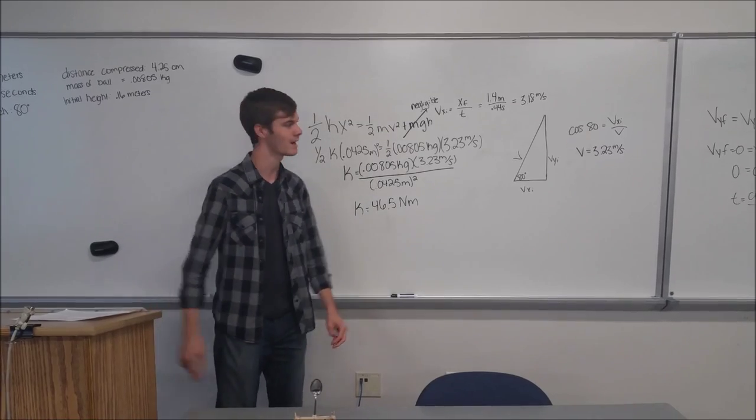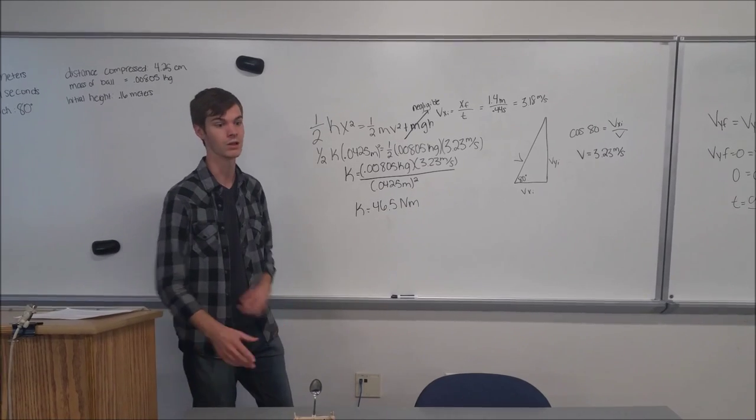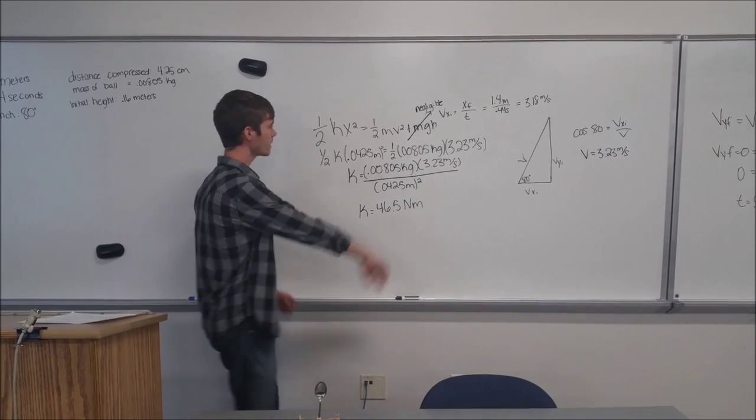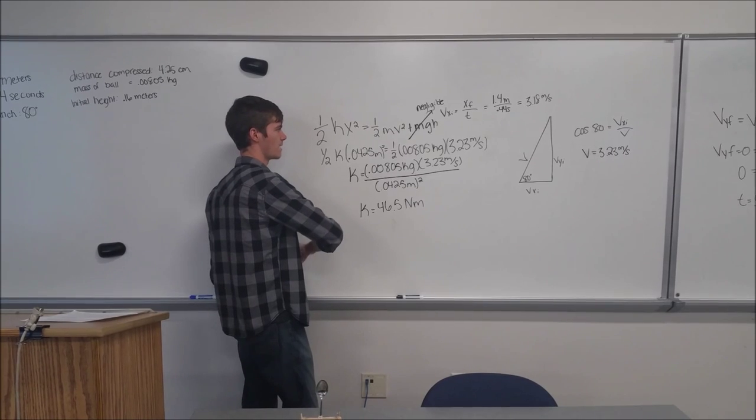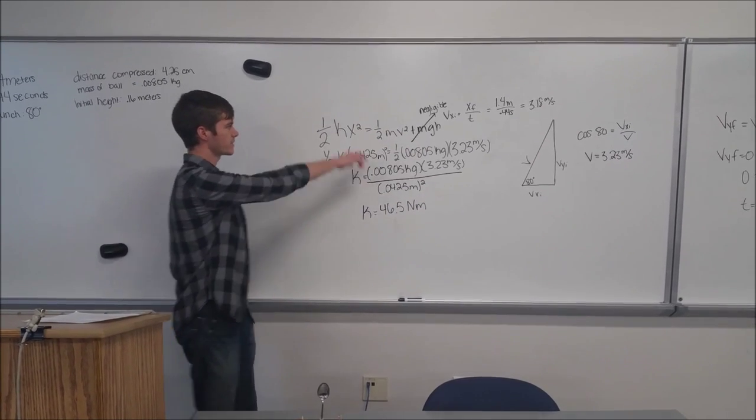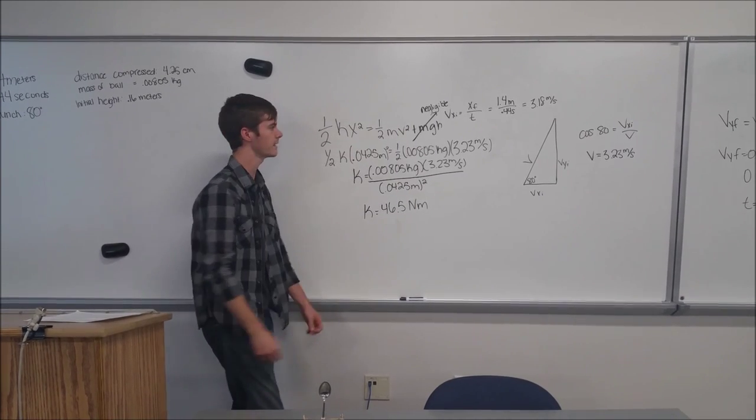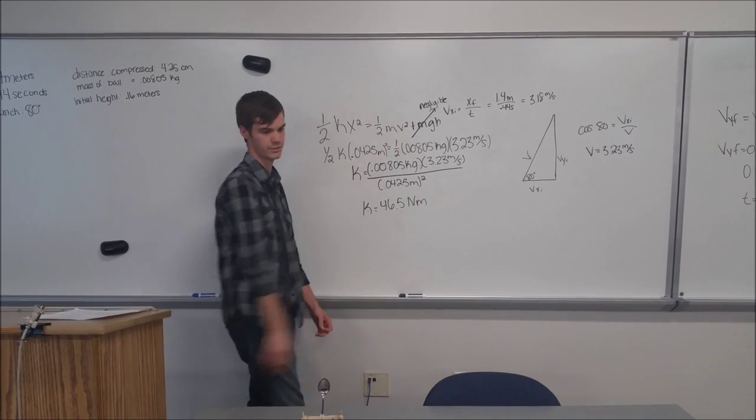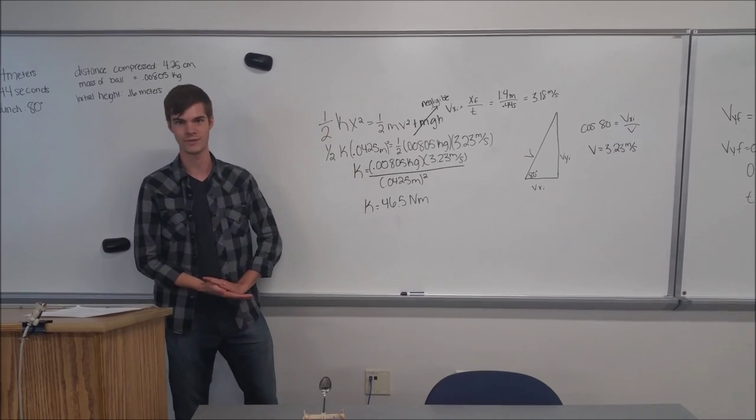Hi, I'm Tim. I'm going to analyze the launch of our catapult. We can analyze the launch using conservation of energy. We can have the potential energy of the spring, which is one-half kx squared, is equal to the final kinetic energy of the spring, one-half mv squared.